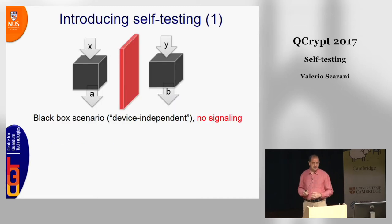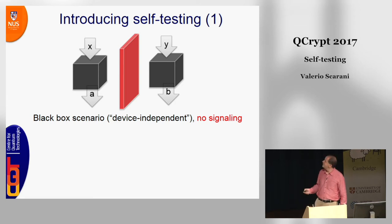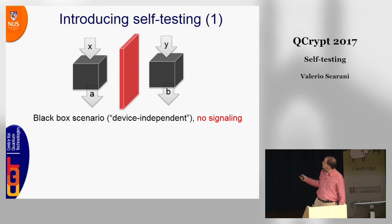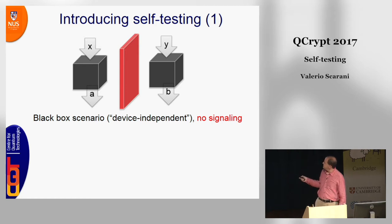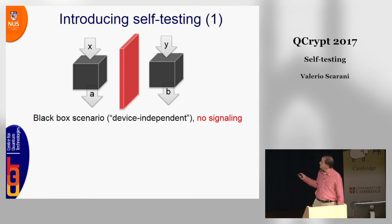So what is self-testing? This is the typical device-independent setting. There are two players who cannot communicate; each player receives an input and produces an output. The usual assumption here is no-signaling. Besides that, we don't know at all what these boxes are doing. Of course, the idea is that they may be sharing a quantum entangled state.